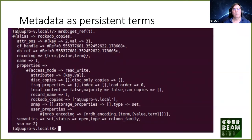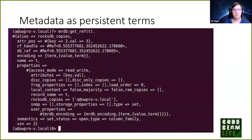One thing we're making use of is persistent terms, introduced in OTP 21. That allows us to access lots of metadata for the tables extremely quickly. Persistent terms are expensive to update but lightning fast to read. Creating tables and modifying table metadata happens very seldom, so it's actually perfect for this scenario.